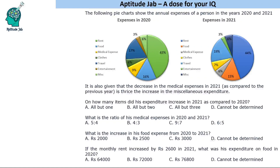Welcome to Aptitude Jab. This is a set based on pie charts — two pie charts are given showing the annual expenses of a person in the years 2020 and 2021. The total expense is not given for either year, so we will have to use the ratios of the total expenses. There is a single condition given; using that condition we will find the ratio of expenses in the two years and hence answer the questions.